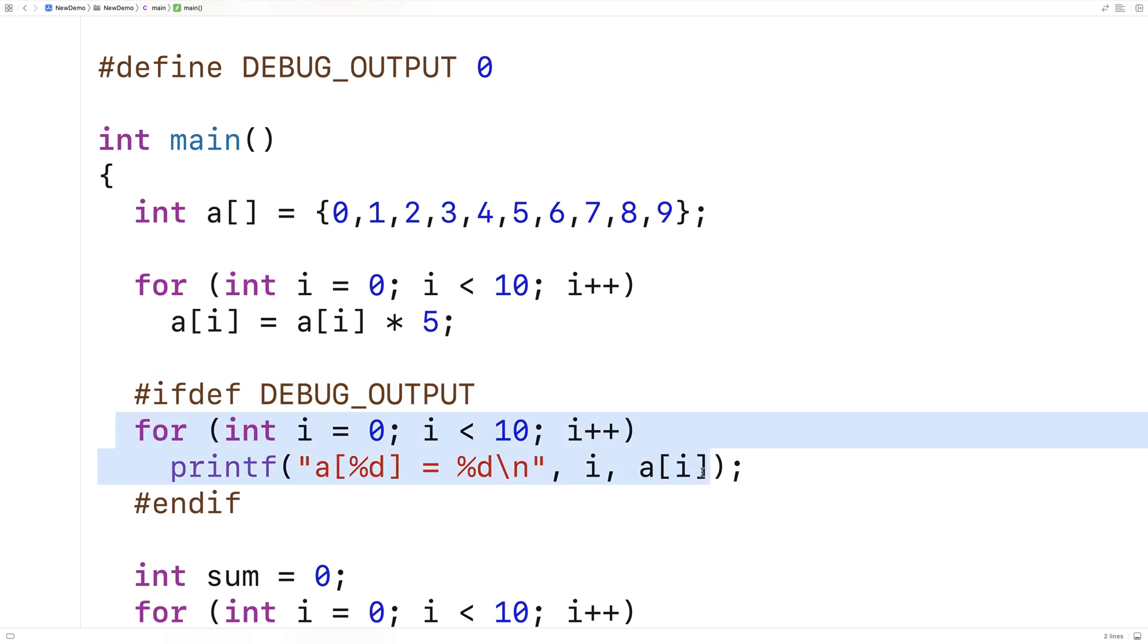That's because this preprocessor directive recognized that DEBUG_OUTPUT was defined. Therefore, it outputs this block of code in the actual compiled source code. This is how we could activate and deactivate segments of code like this that programmers often write when trying to debug programs.